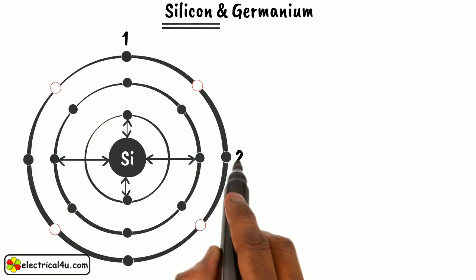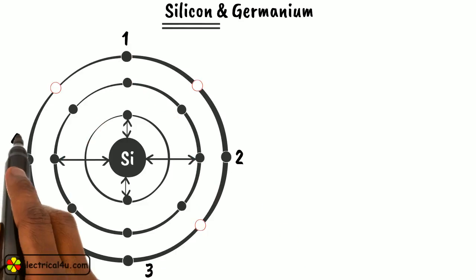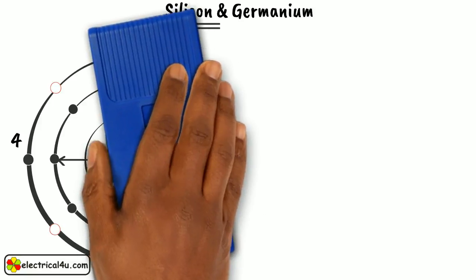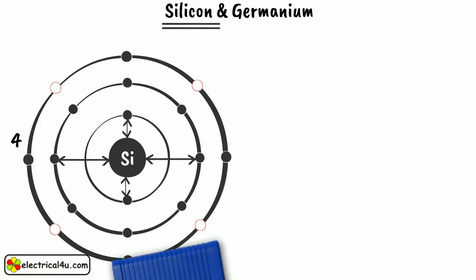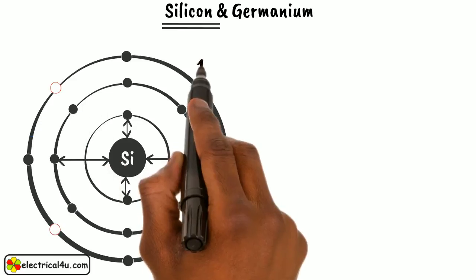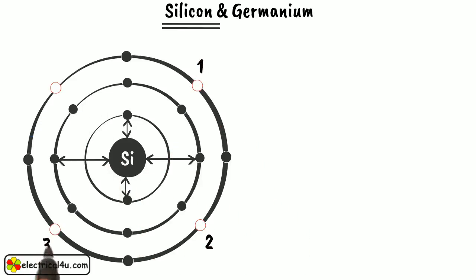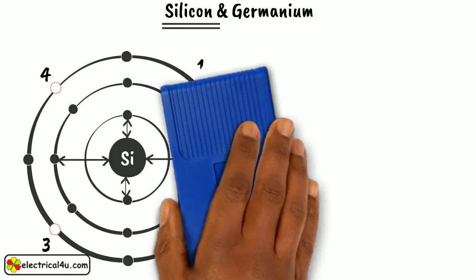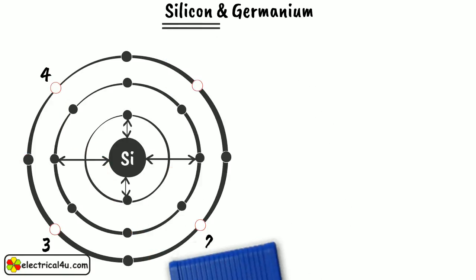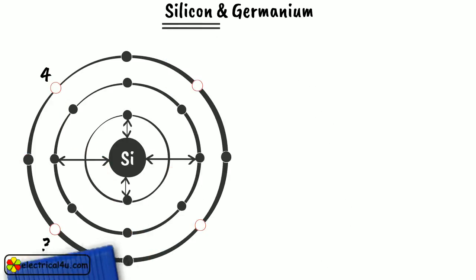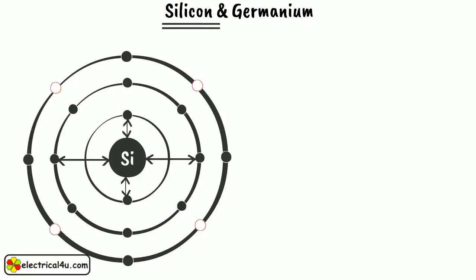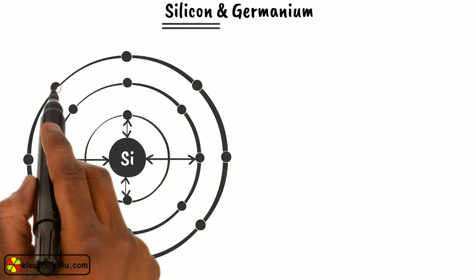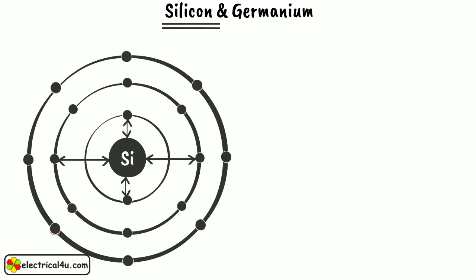A semiconductor atom has 4 valence electrons and 4 vacancies. These 4 vacancies require 4 more electrons so as to make the outermost orbit completely filled with a total of 8 electrons.